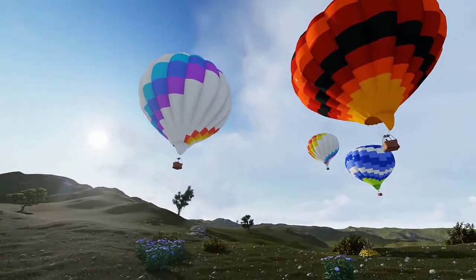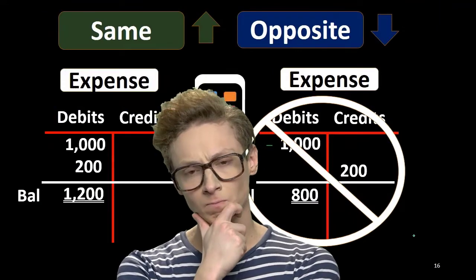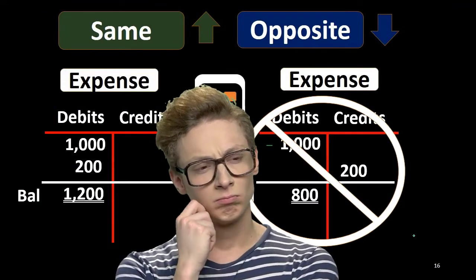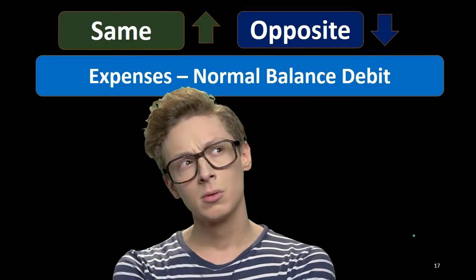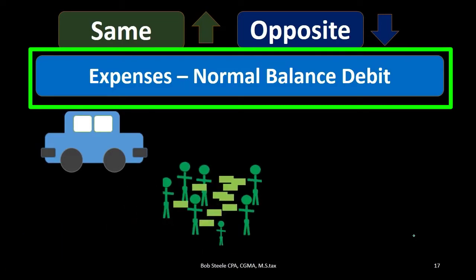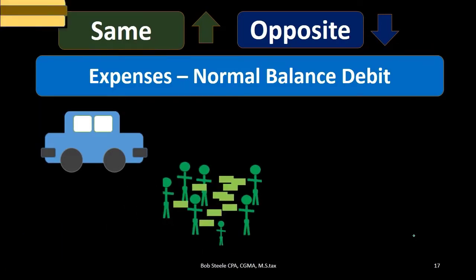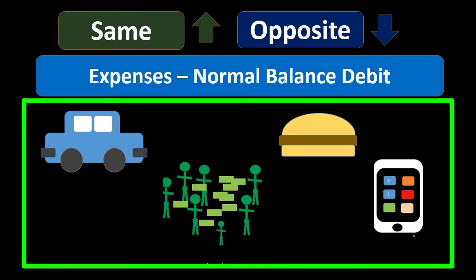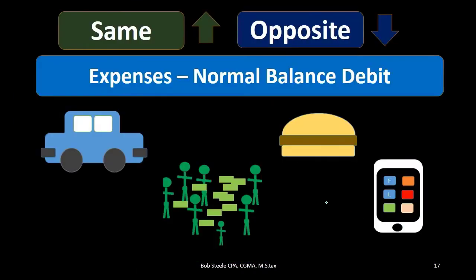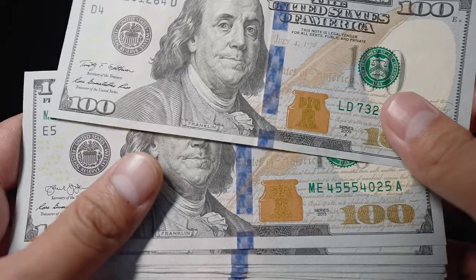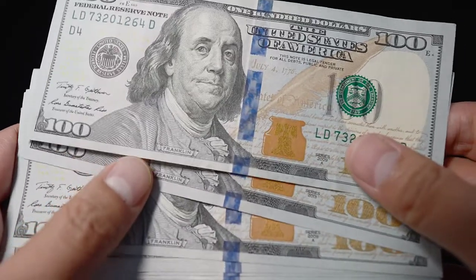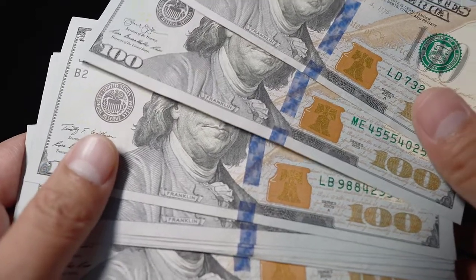The exceptions to the rules will come around later, especially when dealing with cost of goods sold and returns. Expenses can include auto expense, wages, meals and entertainment, and telephone expense. Note that there will typically be more expenses than any other type of account. If you understand that expenses always basically go up and all have normal debit balances, that will simplify the whole process of recording journal entries.